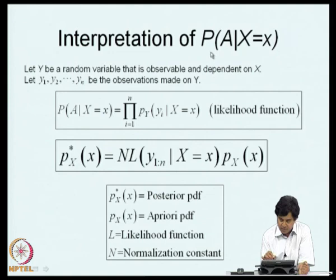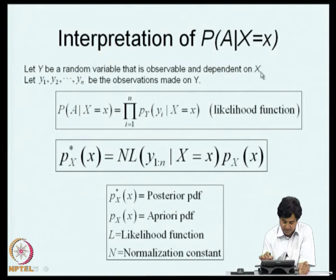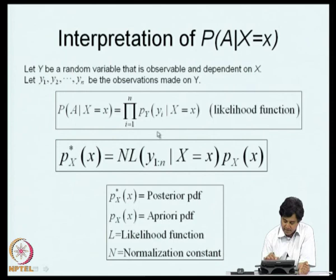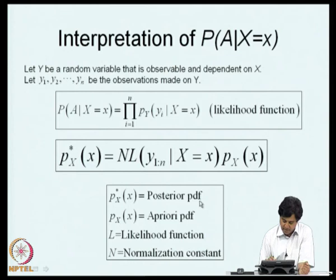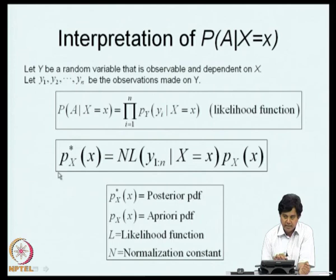The interpretation of P(A|X=x): let Y be an observable random variable dependent on X, and Y_1, Y_2, ..., Y_n be observations on Y. We define the likelihood function as the product of P_Y(y_i | X=x) over all observations. This represents the wisdom in our observations. In summary: the posterior pdf P_X(x|A) is proportional to the likelihood function L times the prior P_X(x), with a normalization constant ensuring the area under the curve is 1. With this, we conclude the discussion on random variables.